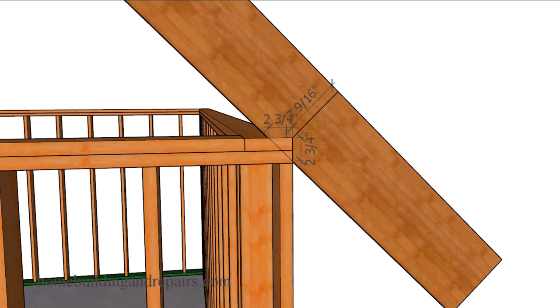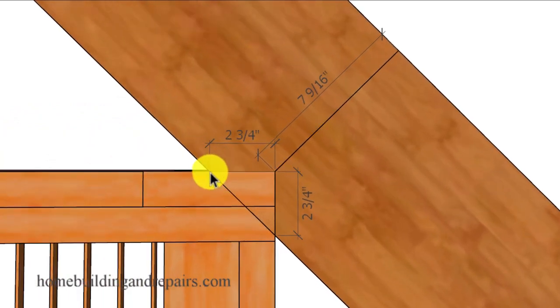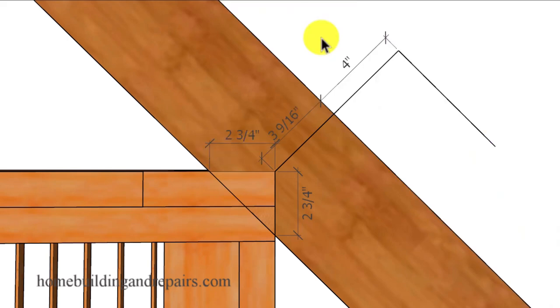In our next example, let's reduce the horizontal seat cut measurement to two and three quarter inches to provide you with an example of how this measurement here will increase by reducing the length of the horizontal measurement. Now for the grand finale in the video, let's change the two by ten to a two by six. If we keep our two and three quarter inch horizontal seat cut measurement, we're going to reduce this measurement here to about three and a half inches.